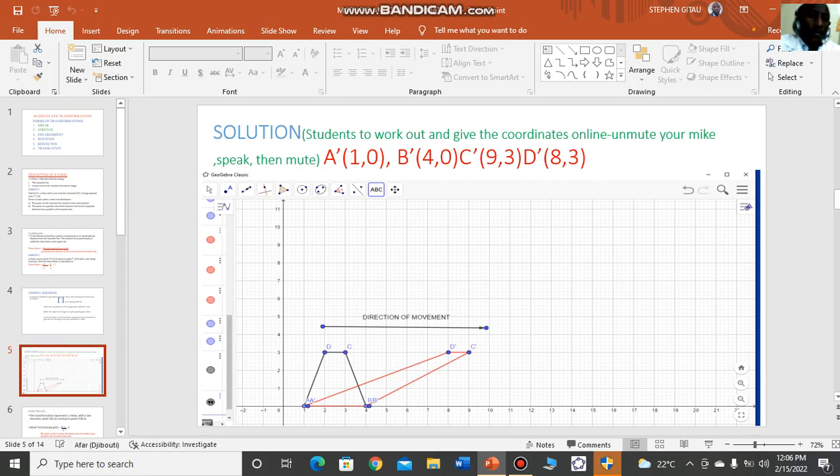In our next slide, I believe you are through. We see the answers. The solution: A' is (1,0), B' is (4,0), C' is (9,3), D' is (8,3).